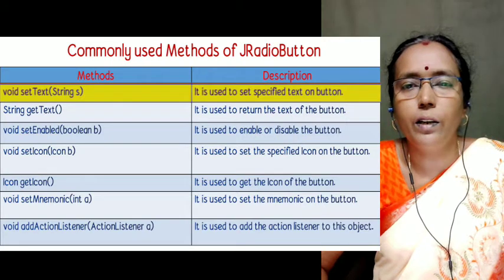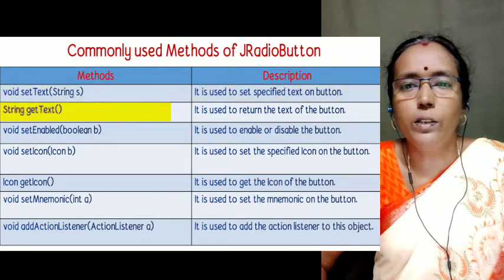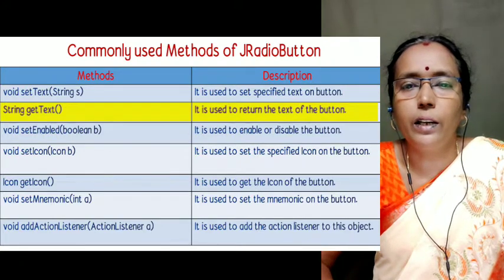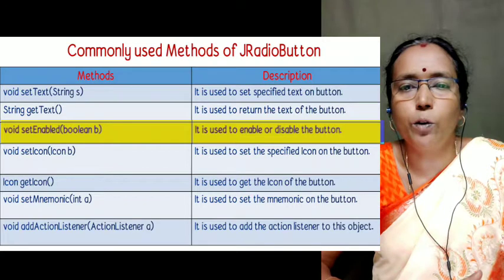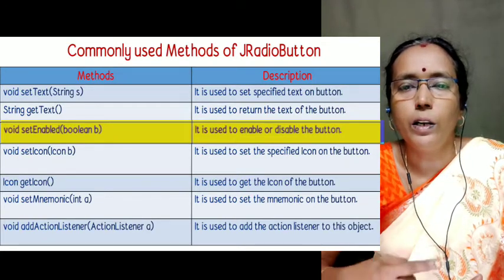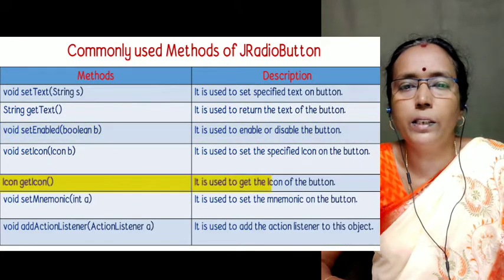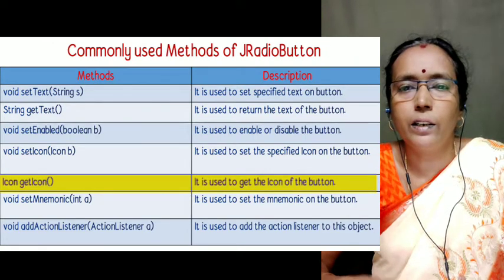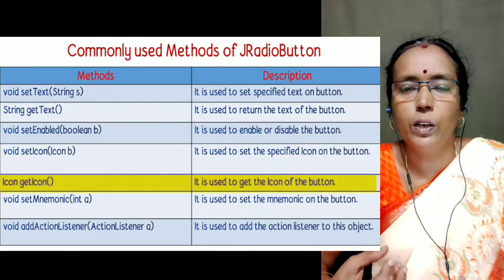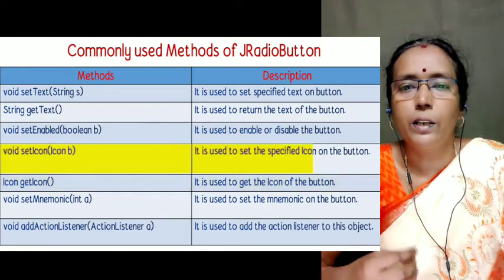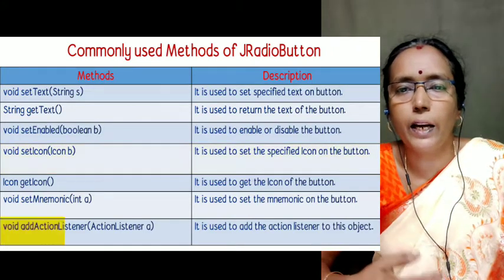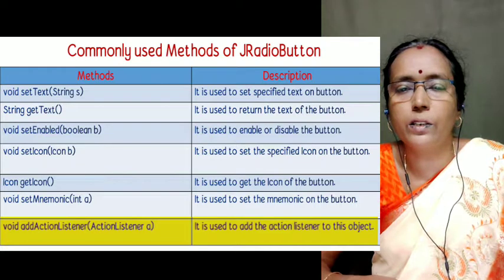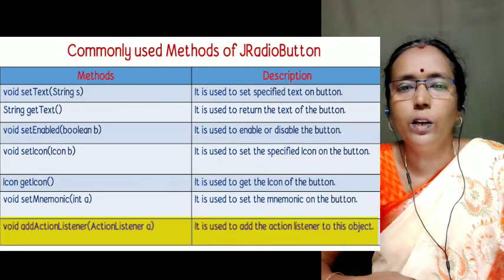Now we shall move on to the commonly used methods of JRadioButton. The first method is setText, which sets the label of the radio button. The second is getText, which retrieves the label or caption. The third is setEnabled, which enables or disables the button. The fourth is getIcon, which reads the current icon or image available with the control. The fifth is setIcon, which changes the icon of the radio button. The sixth is addActionListener, which registers actions with the ActionListener interface. These are the commonly used methods.